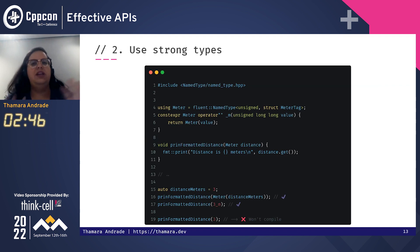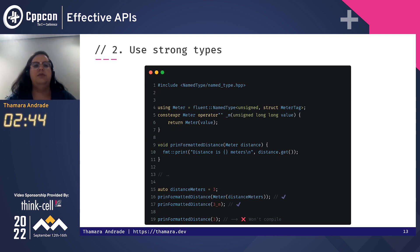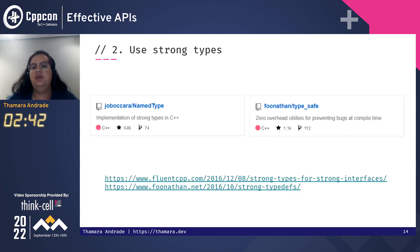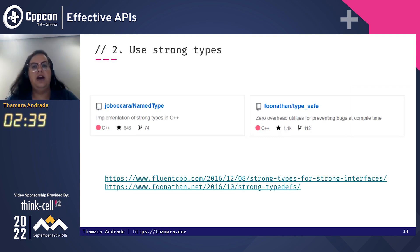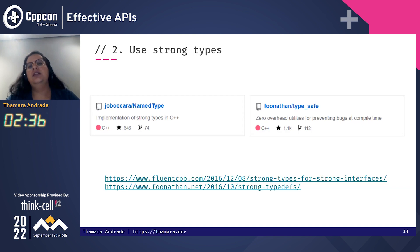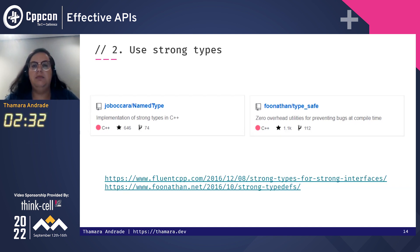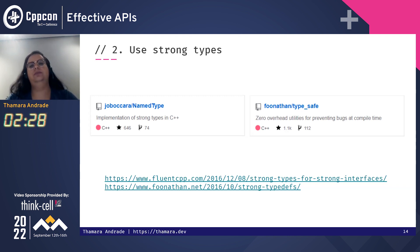We can get even fancier here and improve the APIs further. I have mentioned named_type, but there are a lot of other libraries out there that you can check out, and I have linked some blog posts here for you to understand more and even build your own.